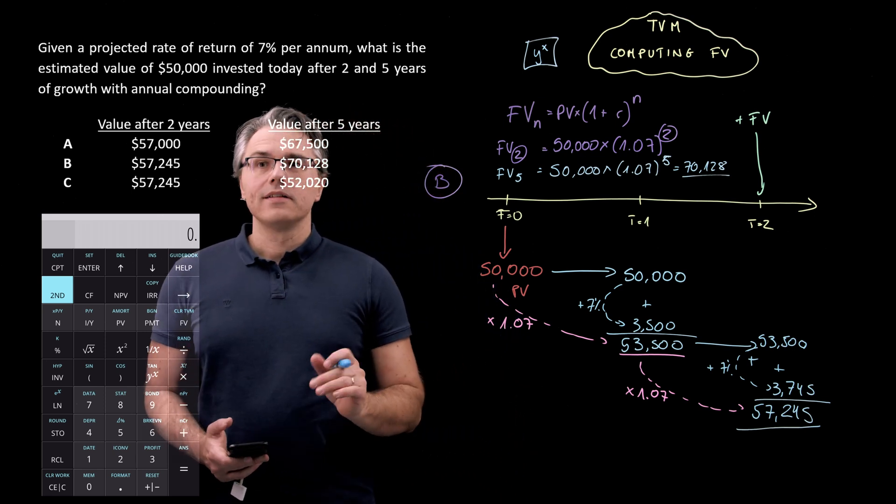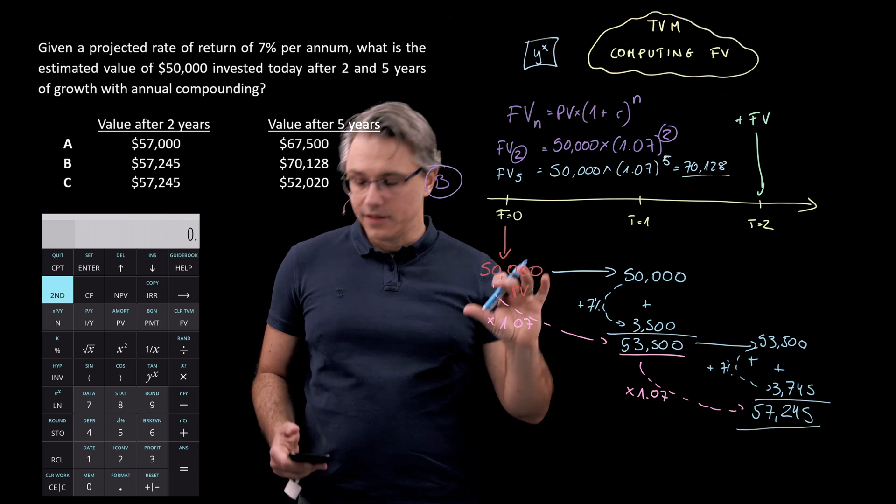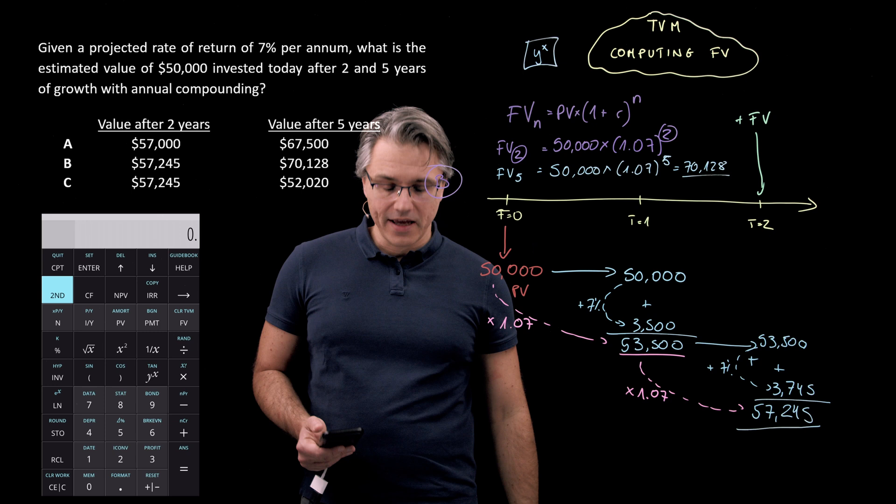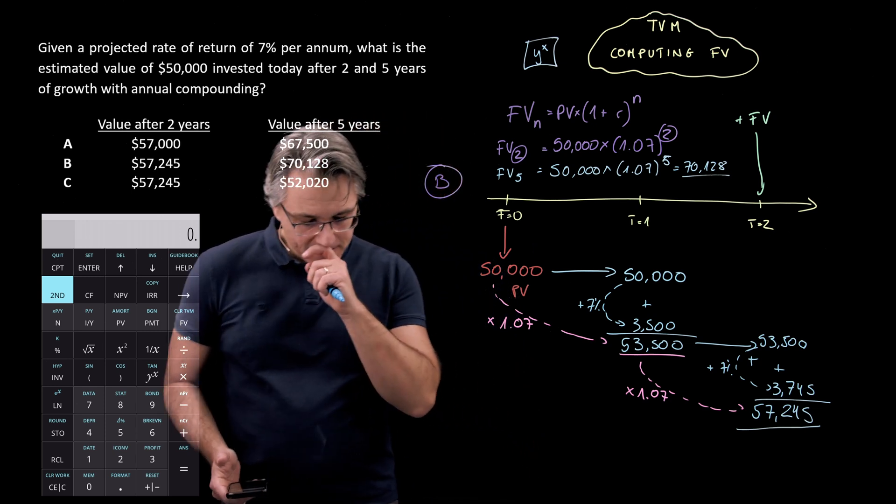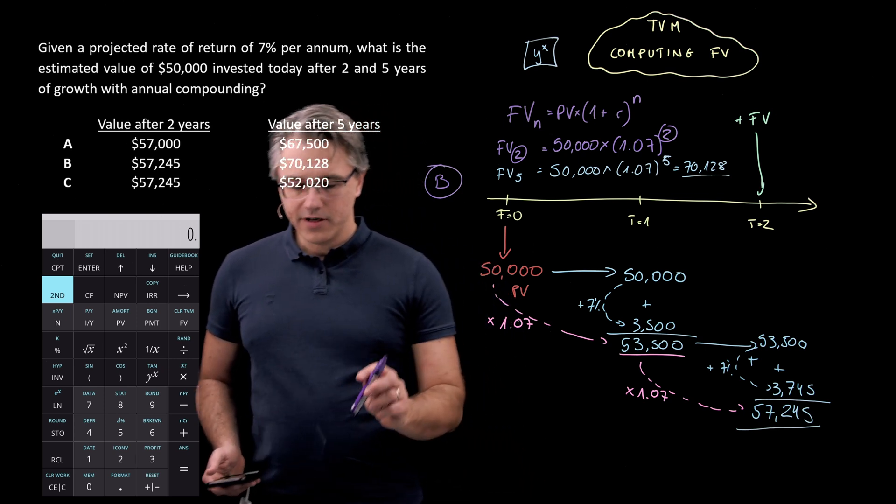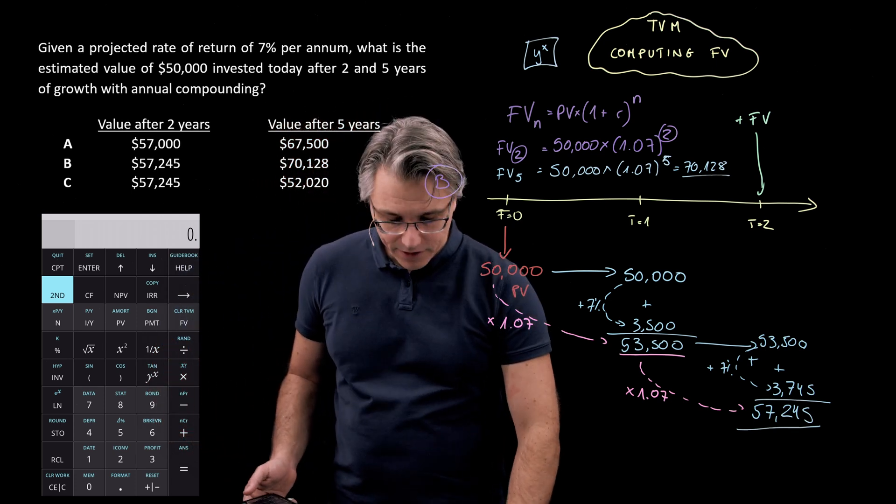Now, the worksheet consists of the third row from the top on your calculator. So the one starting with N, I over Y, PV, PMT, and FV. And what you need to do here is simply provide the inputs for the problem. But first, always, absolutely always make sure to clear the time value of money worksheet.